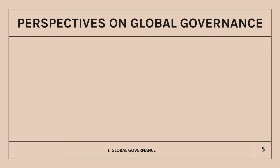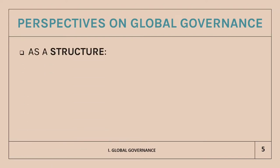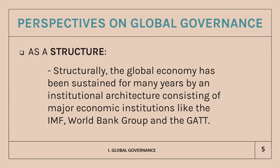Now let's discuss the first main content of this topic, which is about the multiple perspectives on global governance: as a structure, as a process, and as a mechanism. Let's first start with global governance as a structure. Structure means a system of rules and institutionalized modes of social construction. Structurally, the global economy has been sustained for many years by an institutional character consisting of major economic institutions like the IMF or the International Monetary Fund, the World Bank Group, and the GATT or the General Agreement on Tariffs and Trade, created under the auspices of the Bretton Woods system led by the Transatlantic Alliance after World War II.